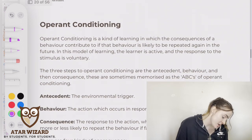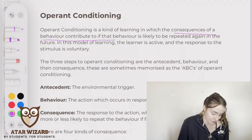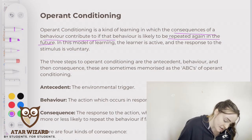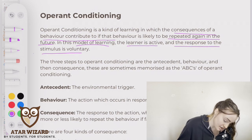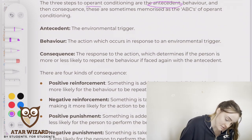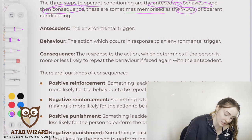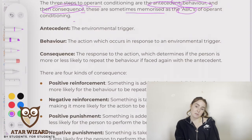Moving on to operant conditioning. Operant conditioning is a kind of learning in which the consequences of the behaviour contribute to whether the behaviour is likely to be repeated again in the future. In this model of learning, the learner is active and the response to the stimulus is voluntary. The three steps are the antecedent, behaviour, and consequence — sometimes memorised as the ABCs of operant conditioning.